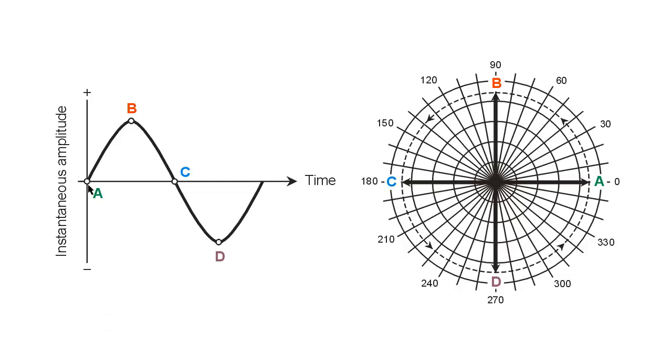Let's suppose that we start at zero amplitude going positively and we call that point A. That is zero degrees of phase, and we can represent that on a polar coordinate plane as a vector pointing in the zero degree direction,